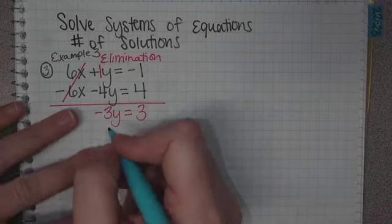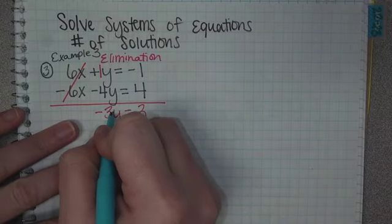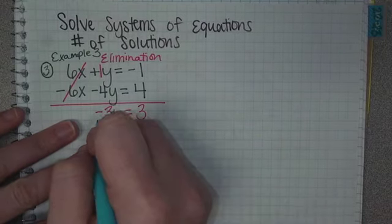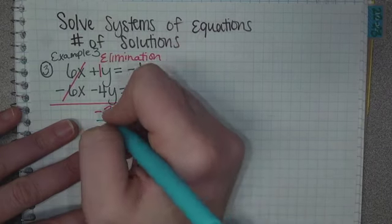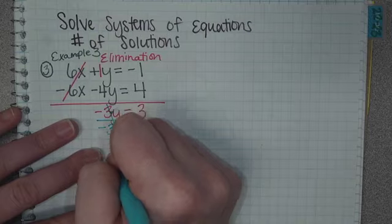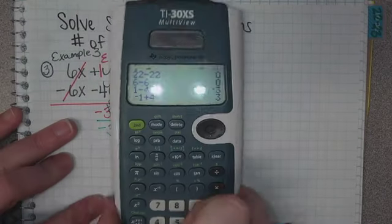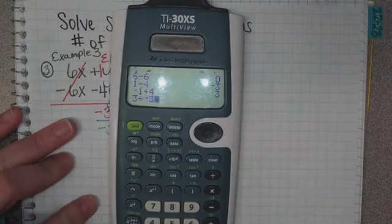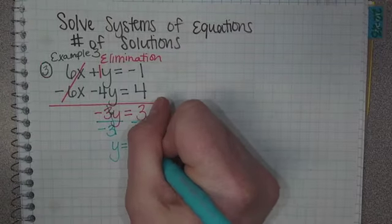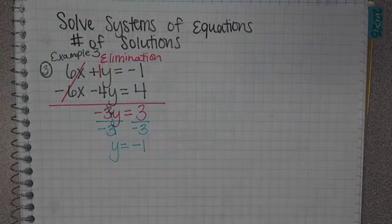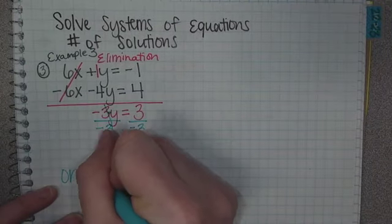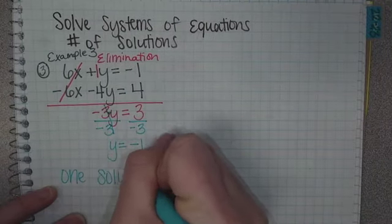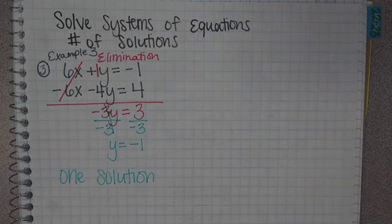Then you just solve like you've been solving. It's negative 3 times y. The opposite of multiply is divide, so we divide by negative 3. That cancels. y equals 3 divided by negative 3 is negative 1.